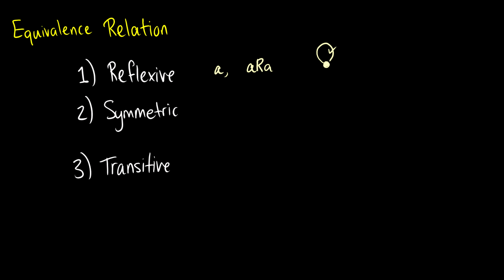For symmetry, if we have points a and b, then if a is related to b, we expect b to be related to a. So if we have two points on a graph here, then if we have an arrow pointing from one to the other, we get another arrow pointing back.